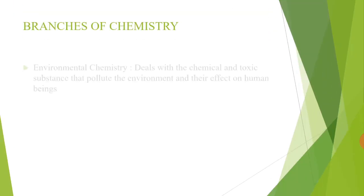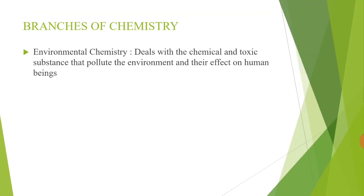Seventh is environmental chemistry. Environmental chemistry deals with the chemical and toxic substances that pollute the environment and their effect on human beings. In environmental chemistry we study the components of environments and the effect of human activities on the environment — for example, water pollution and air pollution, which are the effects of human activities.